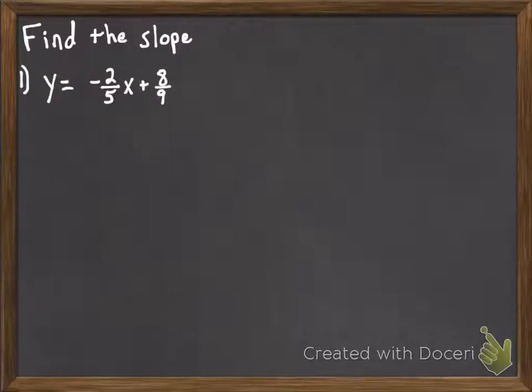So we could begin with a real simple example. Here the equation is in the format that we need it to be in, so we can very easily just read off the slope as negative 2 fifths.